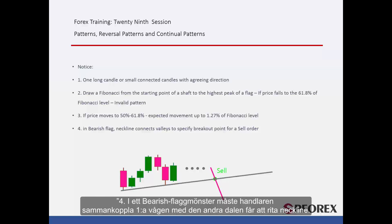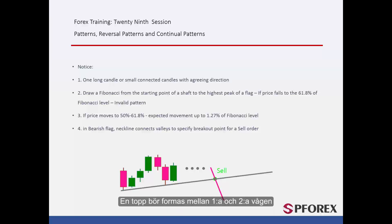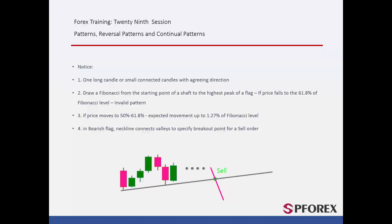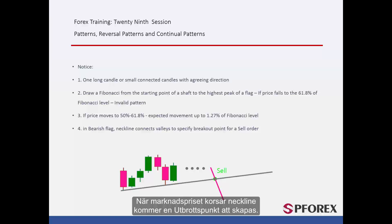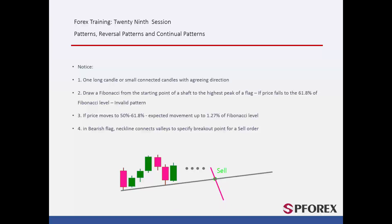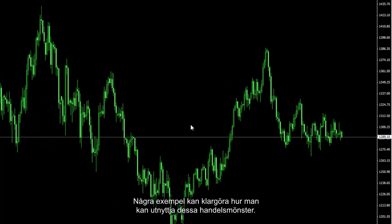In a bearish flag pattern, a trader must connect the first valley to the second valley to draw the neckline. A peak should be formed between the first and second valleys. After the second valley, the market price should increase to form more waves. Whenever the market price crosses the neckline, a breakout point will be made. Some examples would clarify how to exploit this pattern in trades.